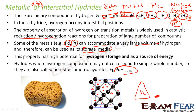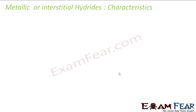These hydrides have a huge potential for hydrogen storage as a source of energy. The ratio is not fixed — it is fractional. For example, for PdH, the value ranges from 0.6 to 0.8. They are therefore called non-stoichiometric hydrides, because the ratio of hydrogen in the metal is not a whole number — it is fractional and varies based on temperature and pressure.